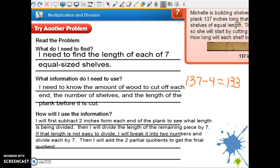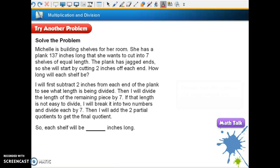So how will I use this information? I will first subtract two inches from each end of the plank to see what length is being divided. Then I will divide the length of the remaining piece by seven. If that length is not easy to divide, I will break it into two numbers and divide each of them by seven. Then I will add the two partial quotients. All right. So here we go. We're going to do our partial quotient work.